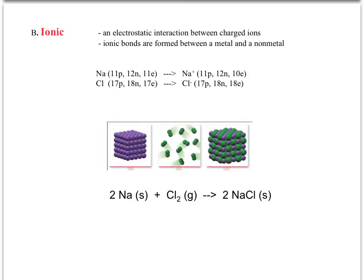Chlorine has 17 protons — we picked the Cl-35 isotope, so it has 18 neutrons. When neutral, it has 17 electrons. When it gains the electron that sodium gave up, it now has 18 electrons instead of 17. Since it has one more electron than protons, it carries a negative charge.